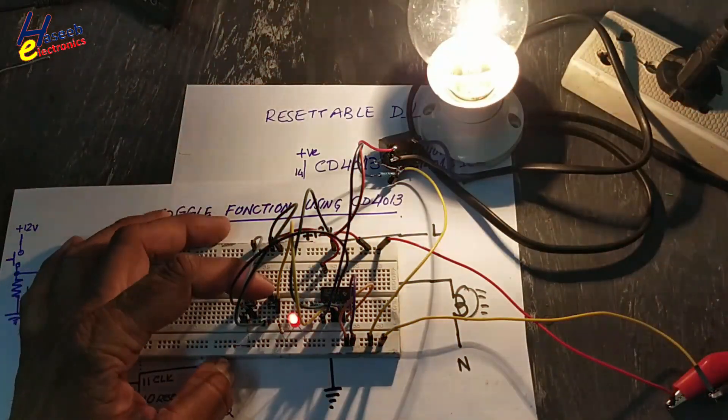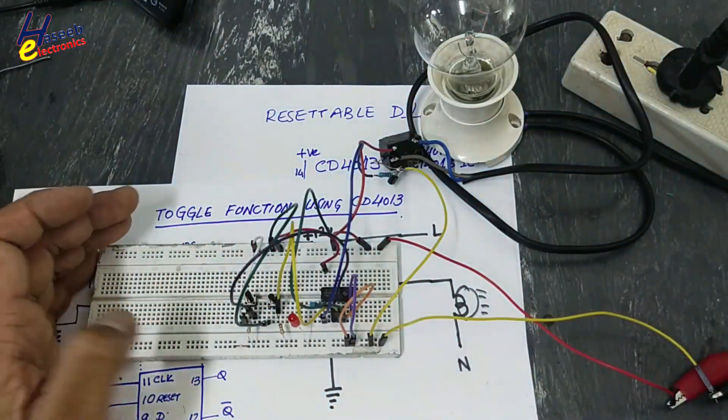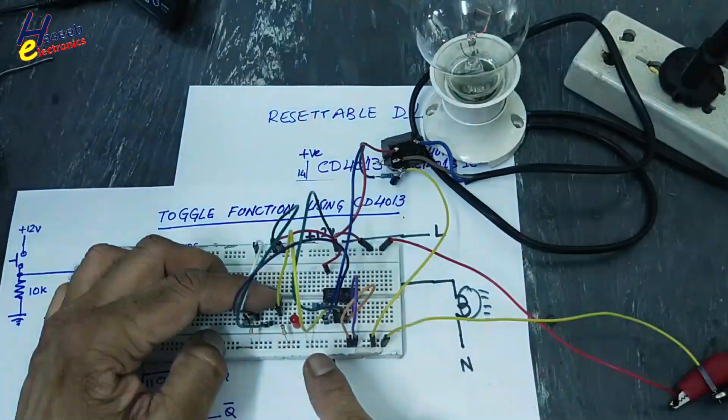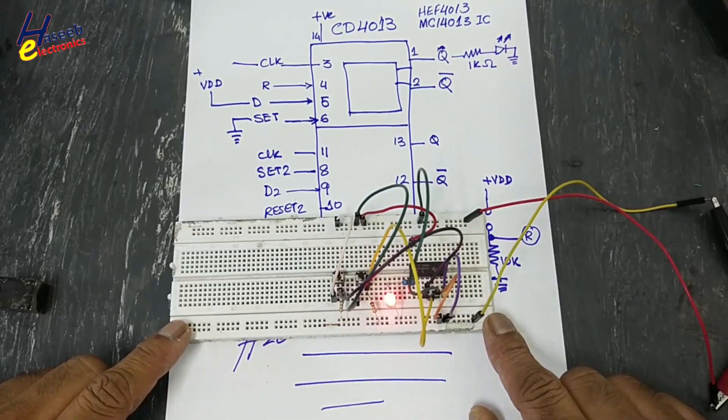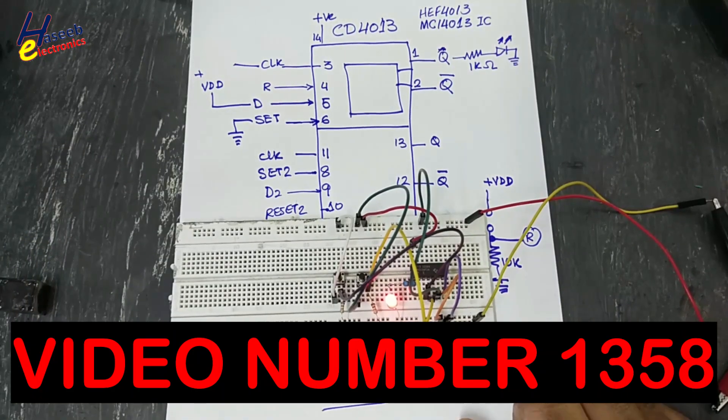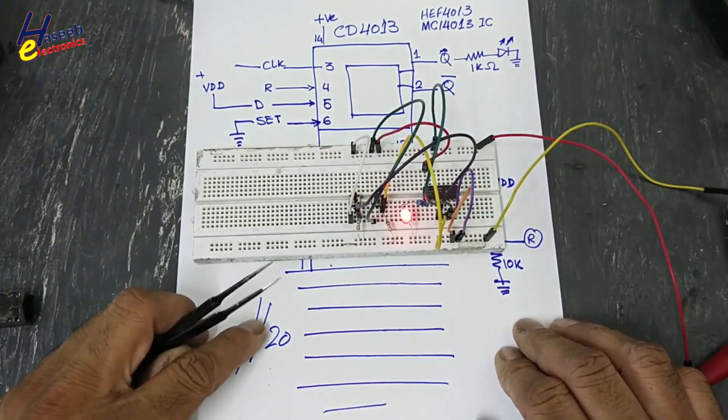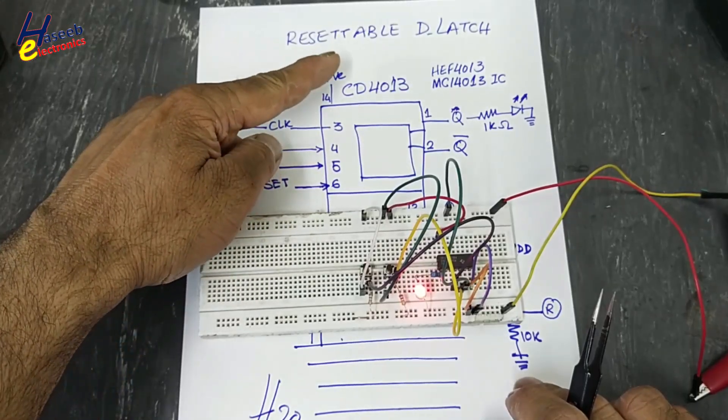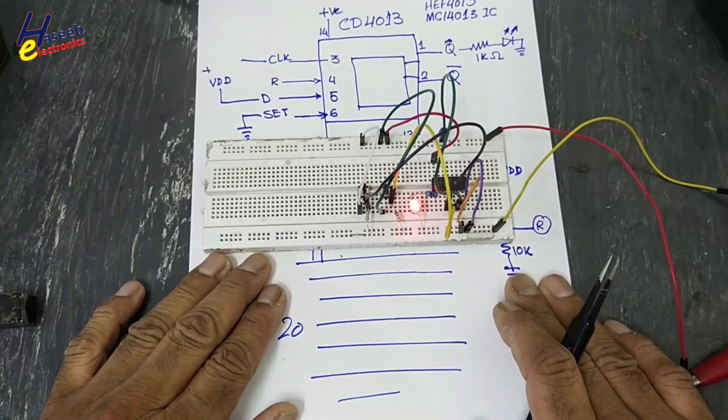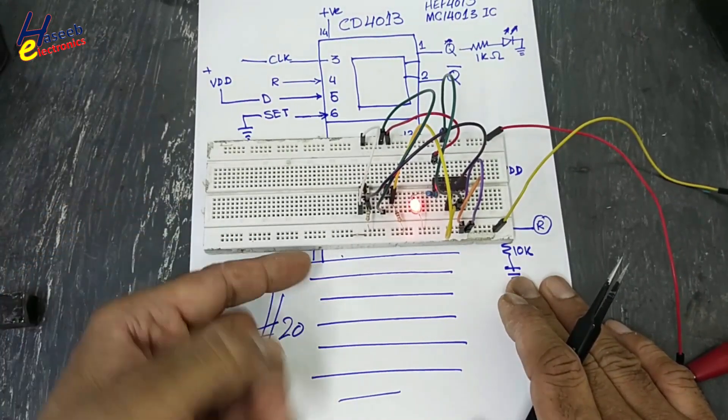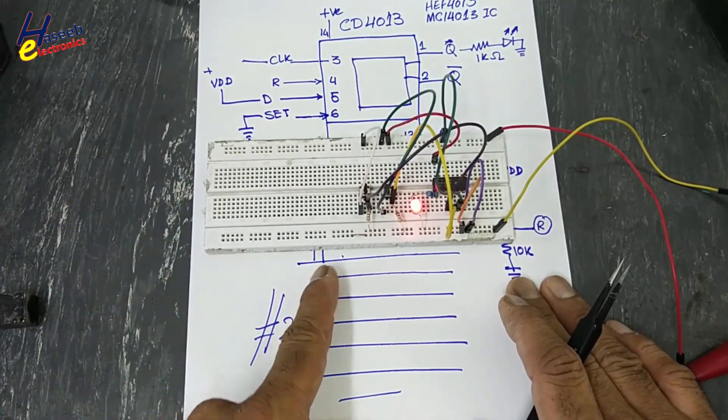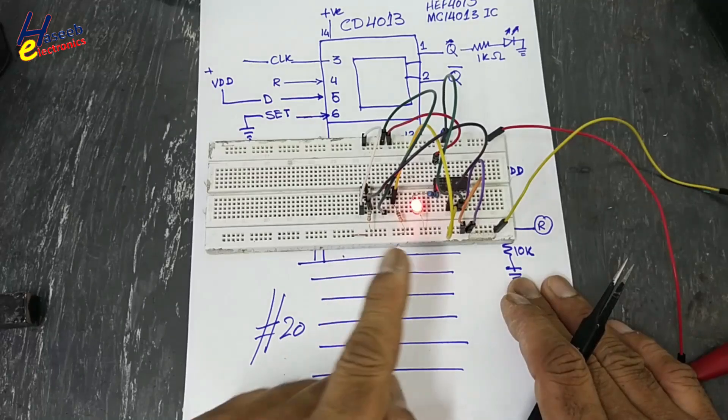Welcome back to my channel. In the last session, I shared a circuit based on a question from my viewer. He needed a resettable D-latch for 20 line data and wanted to monitor every line, so for each line we need a D-latch. I shared a single D-latch circuit.